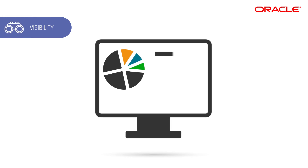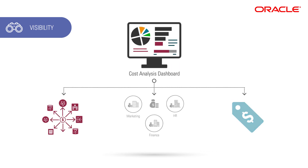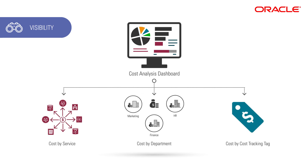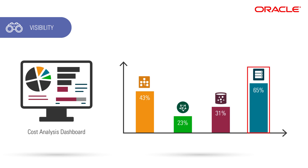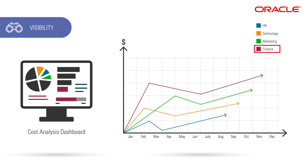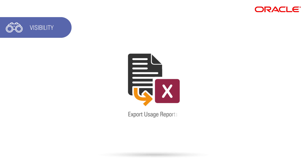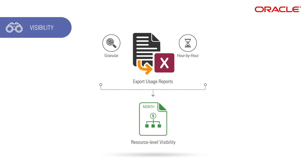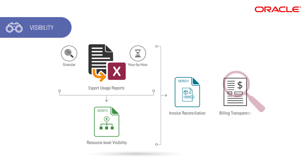Janet relies on Oracle's cost management tools to maintain visibility over spending. With the cost analysis dashboard, she has visibility into cost by service, by department, and by cost tracking tag. She can easily see at a glance the big buckets where money is being spent. For example, she analyzes costs by service and sees that the most money is being spent on compute. She can also analyze cost by department and see that finance is driving the most usage. She can apply cost tracking tags to do chargebacks by IT project. Janet can also export usage reports to get granular, hour-by-hour, resource-level visibility into their billing data for invoice reconciliation use cases and to get more transparency into their bills.